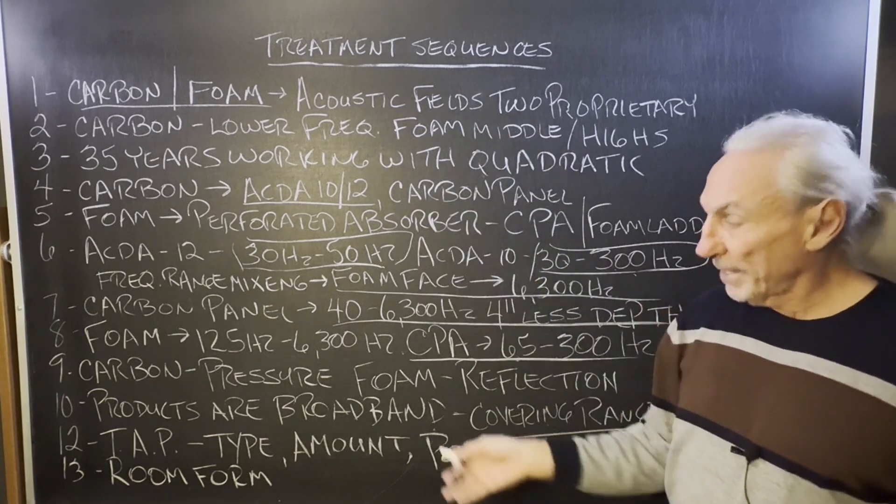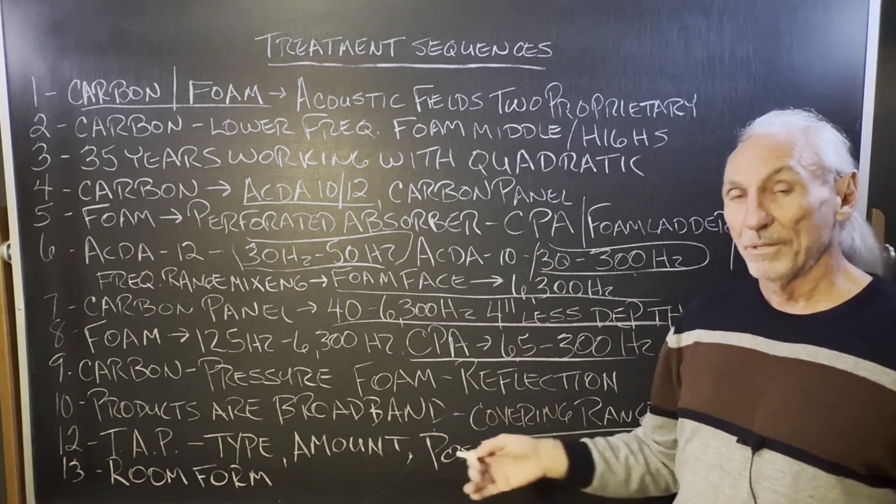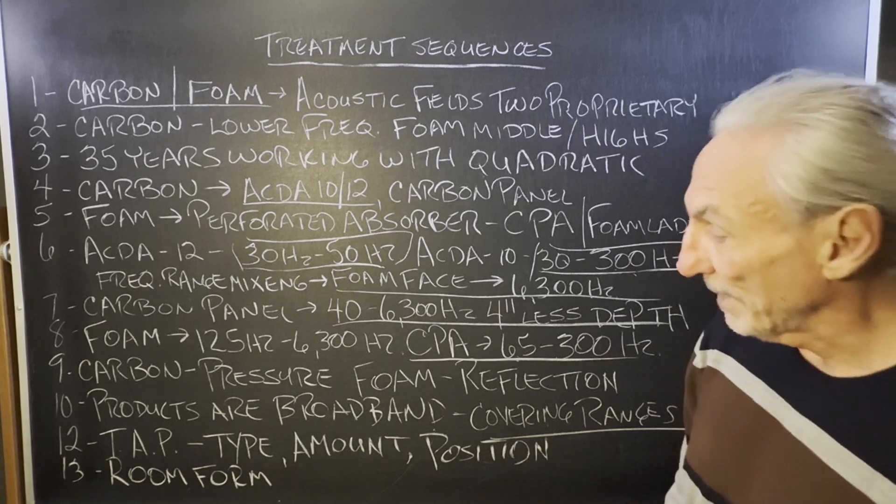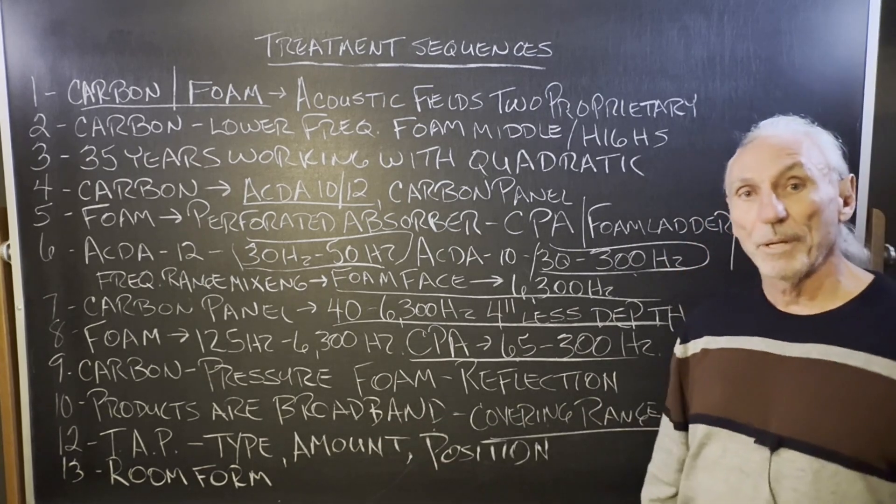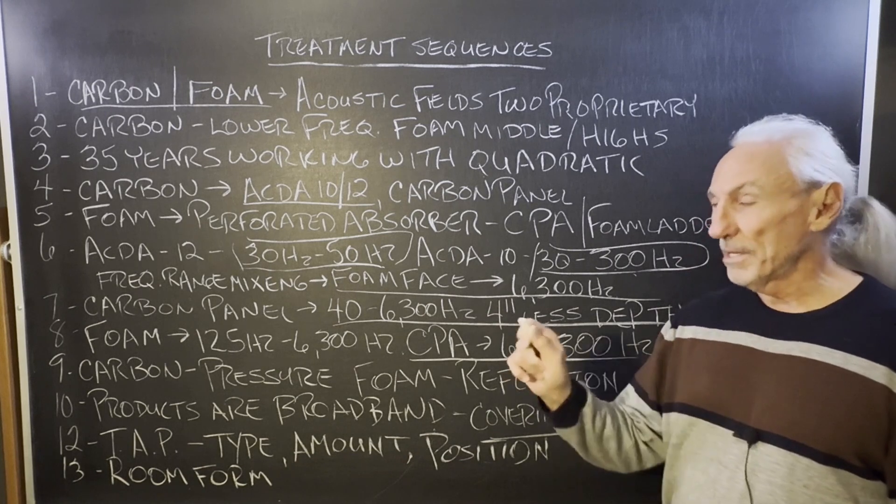So, we have the products to solve all the problems. Now, we have to find the space and the money. Those are always the two issues that we face. Go to the room form on our website. It's on the home page, top left. It says, I think, room analysis.